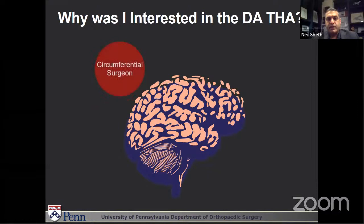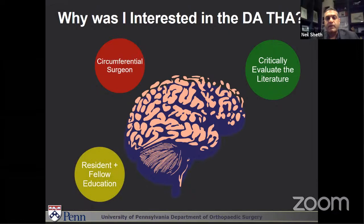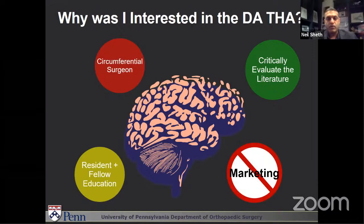Number one, the most important thing for me as a hip surgeon was that I should be circumferentially comfortable getting into the hip from the front, from the side, or from the back. Number two, there's a lot of literature coming out regarding the anterior approach, and it's very hard to critically evaluate the literature if you've never done the approach. Most importantly, residents and fellows in the United States are requesting exposure to anterior approach total hip replacement, and as the site director for our fellowship at Pennsylvania Hospital, I think it's important to provide the educational items our residents and fellows are asking for. This had zero to do with marketing — very few patients I can even think of have ever asked for a specific approach.